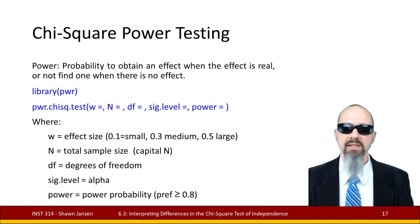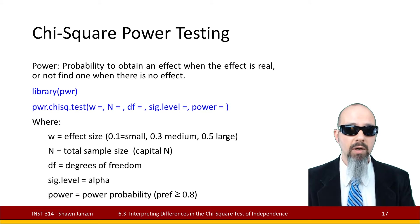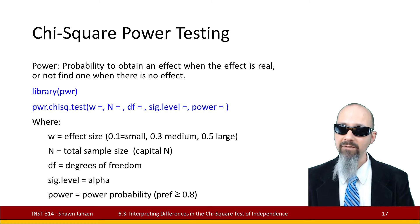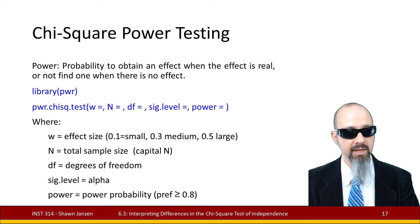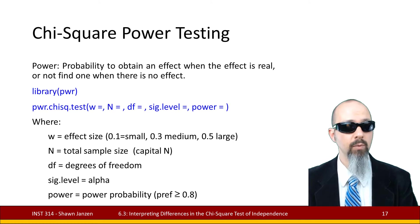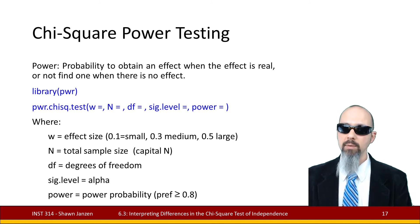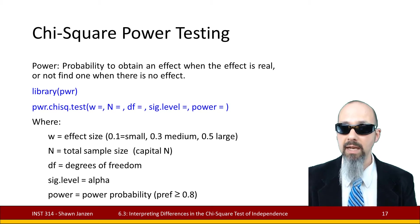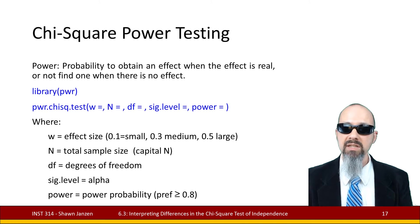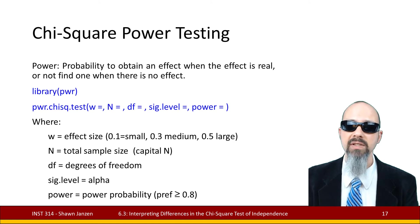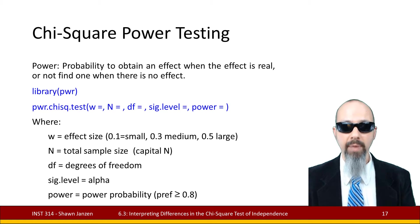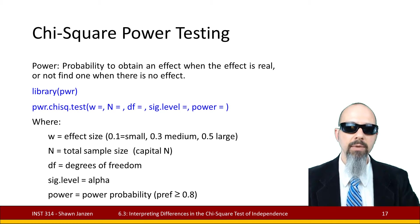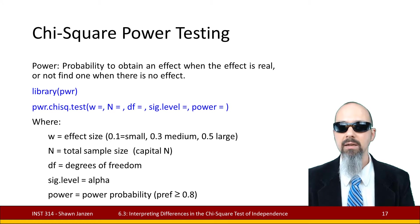Now for power testing — recall that power is the probability that we're going to find a particular effect in our test when that effect is real, or not find one when there's no effect. To be taken credibly, you want a power of at least 0.8 (80%), meaning you'll find the right value 80% of the time. We'll use the pwr library, already mentioned in the previous video, activating it with the library function. The specific function for chi-square is pwr.chisq.test.